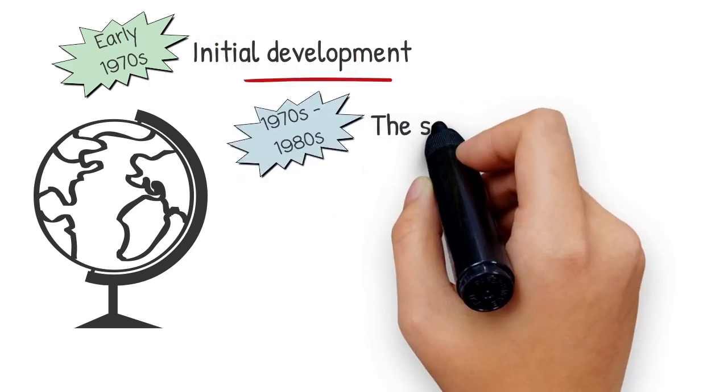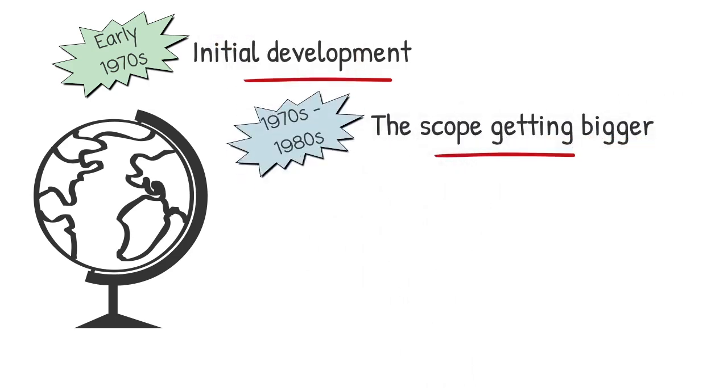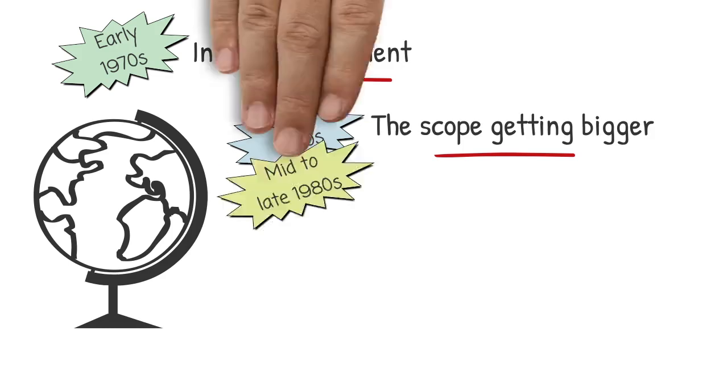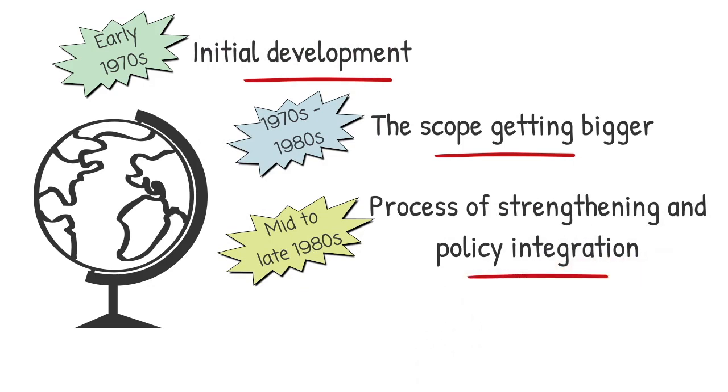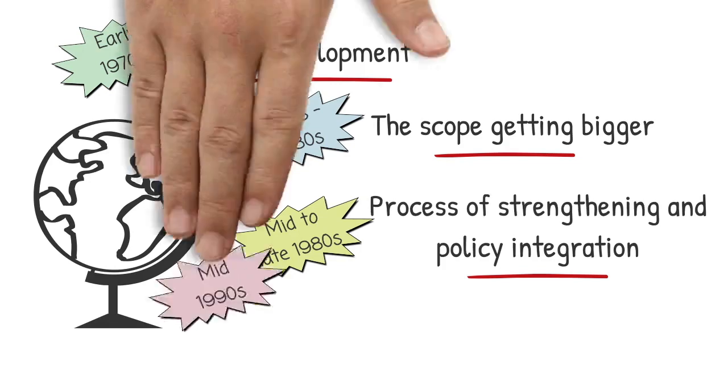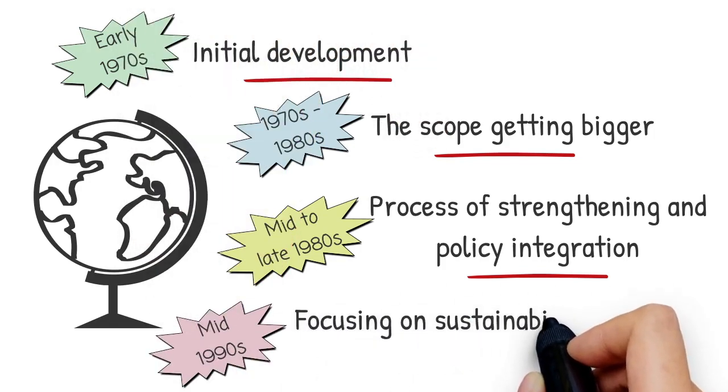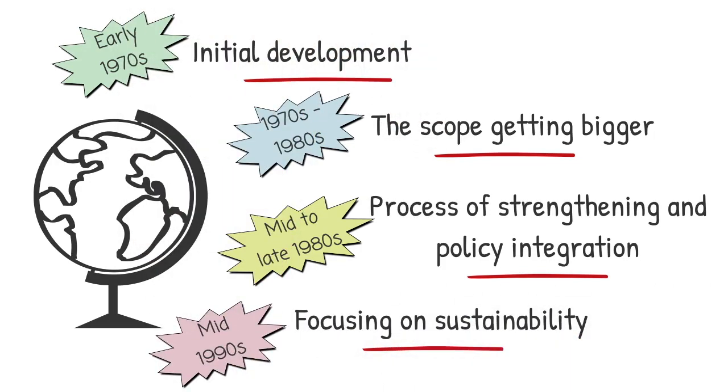Then, in the 1970s to 1980s, the scope became bigger in order to cater to environmental issues. In mid to late 1980s, the process of Environmental Impact Assessment was strengthened with the integration of policy. And in mid-1990s until now, the focus of Environmental Impact Assessment is towards sustainability.